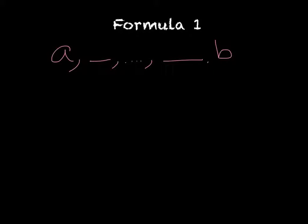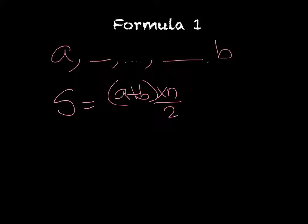Then our formula, s equals a plus b times n over 2. n over 2 represents the number of pairs.